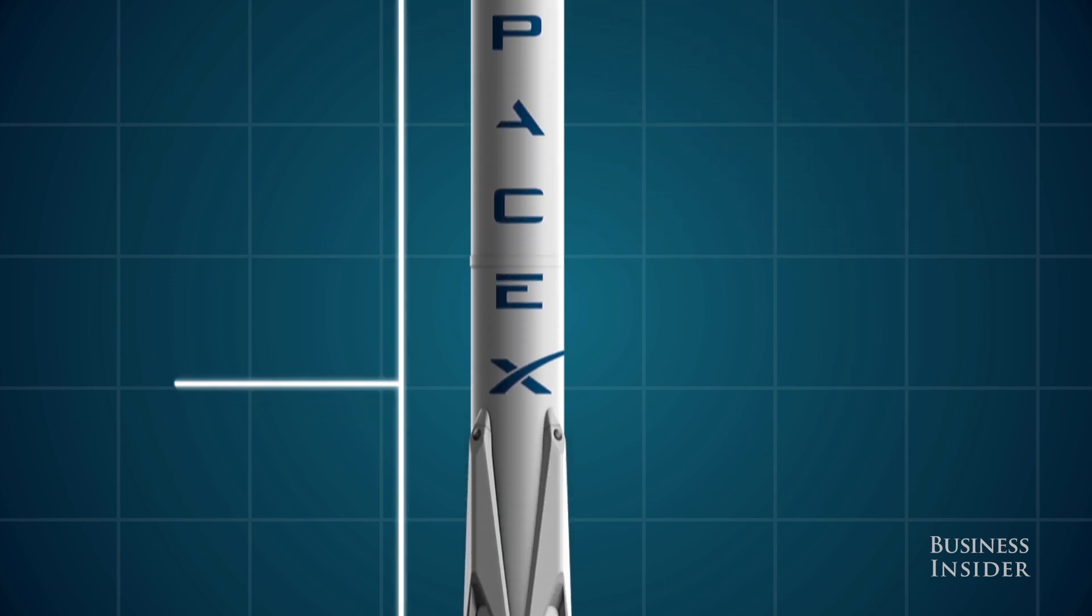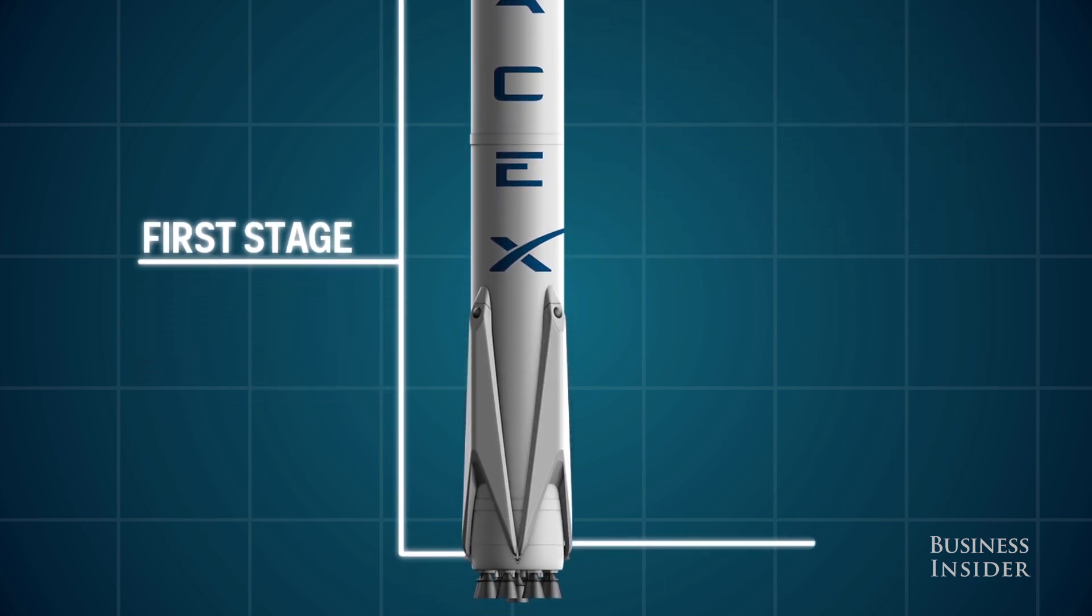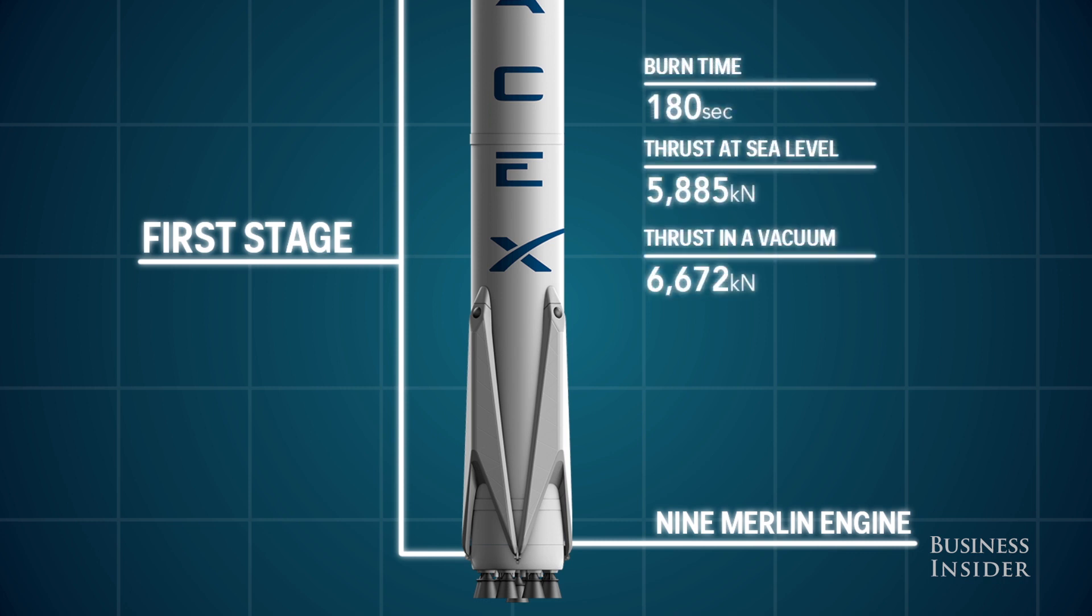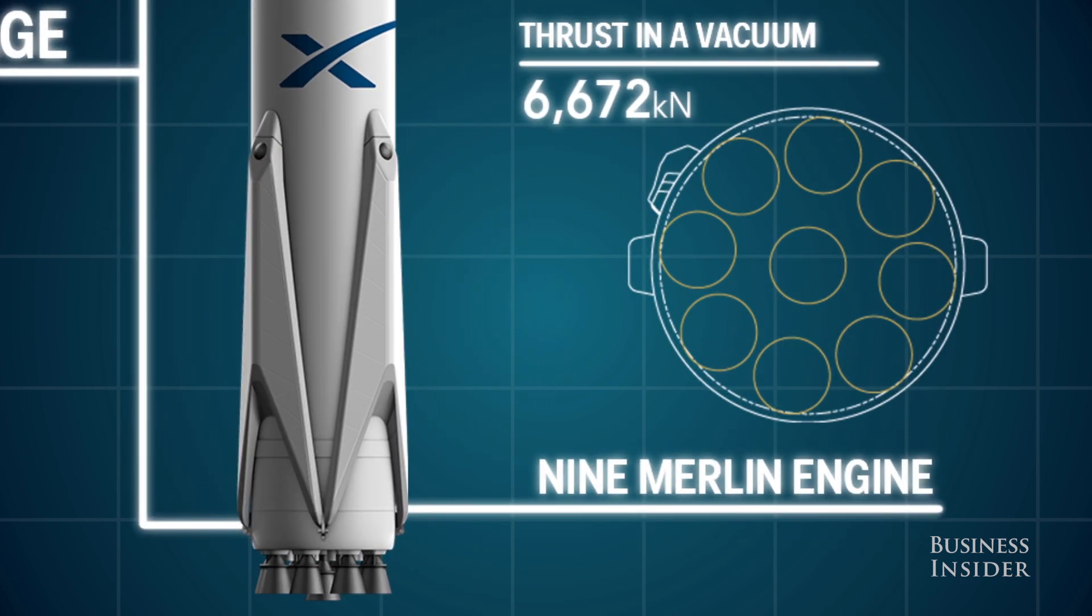Compared to traditional one- or two-engine rockets, SpaceX developed a one-of-a-kind nine-engine design to power their Falcon 9 rockets. So if one of the engines malfunctions in mid-launch, it still has eight more to rely on to get to space and back.